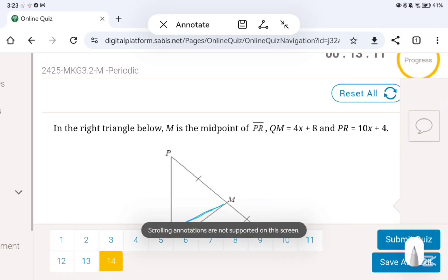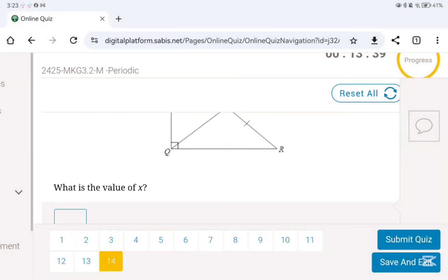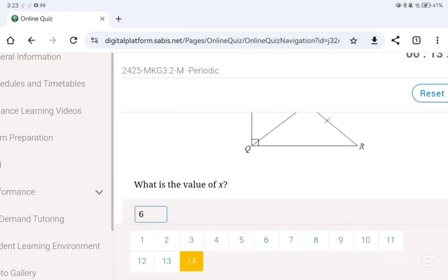Okay, here it says that QM, which is the altitude or the median, is 4x plus 8, whereas PR, the entire thing, is 10x plus 4. So we divide 10x plus 4 by 2, it becomes 5x plus 2. So then we take x to one side, take the numbers to the other side, you will get minus x equals minus 6. Cancel the minuses, it will become x equals 6.